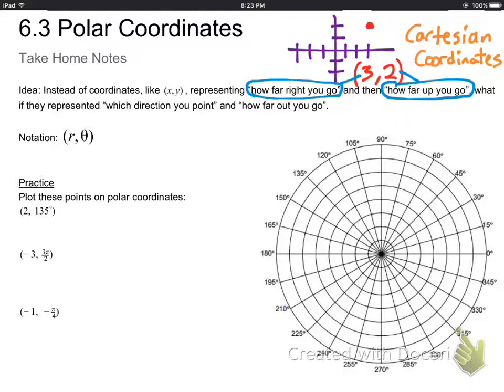But this big map, this kind of circular graph here, is a different kind of coordinate system. So we ask the question, what if instead of going right and going up, instead the numbers mean which direction you're pointing and how far out you go?